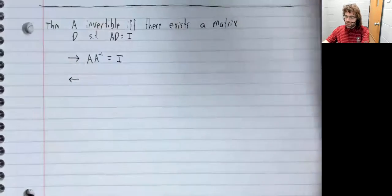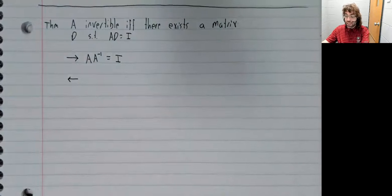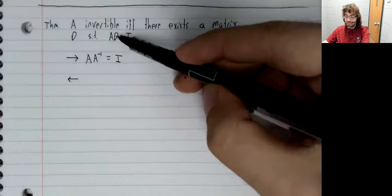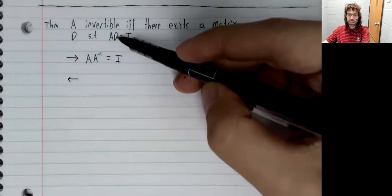Again, going the other way directly is actually quite tricky. Our guess is that if this D exists, D is A inverse, but that's not easy to show.